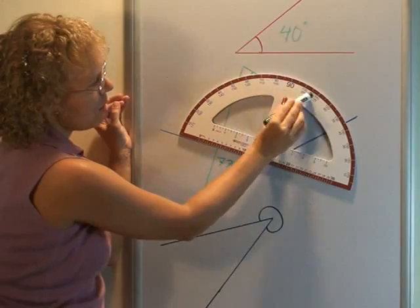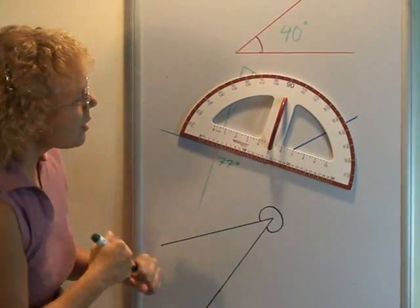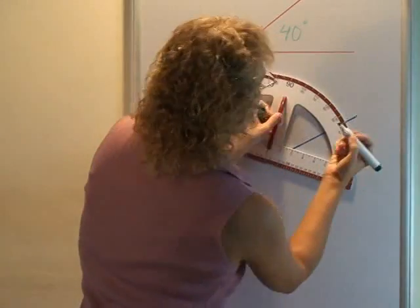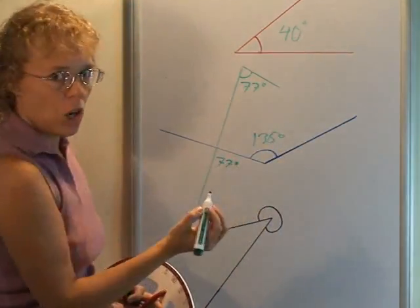And so my angle opens up all the way here. 0, 10, 20. I use the top numbers which is between 130 and 140 degrees. Oh, it's about 135. This is an obtuse angle.